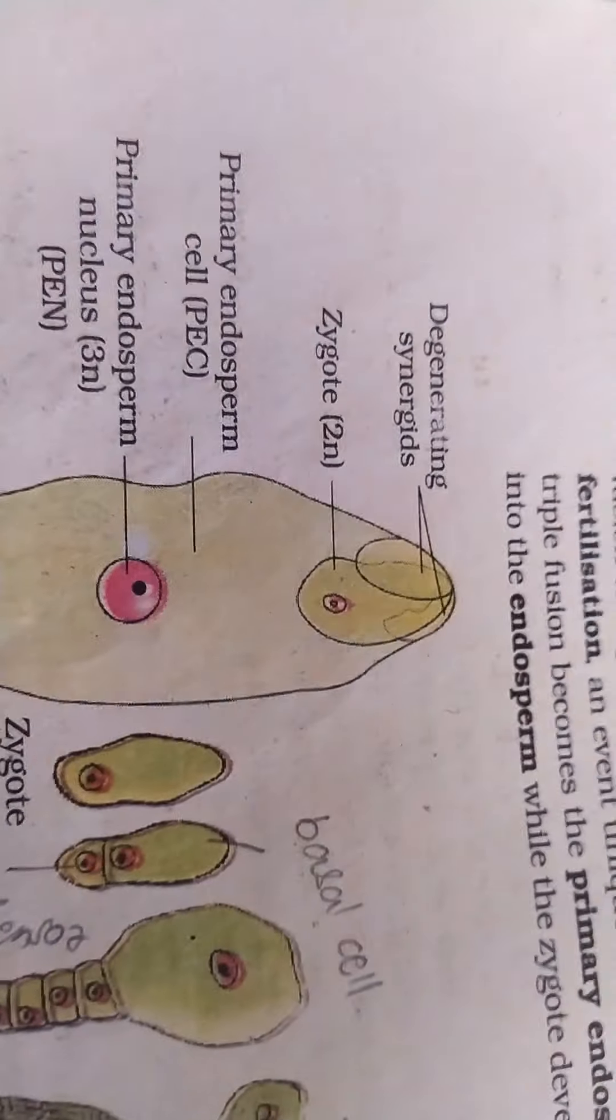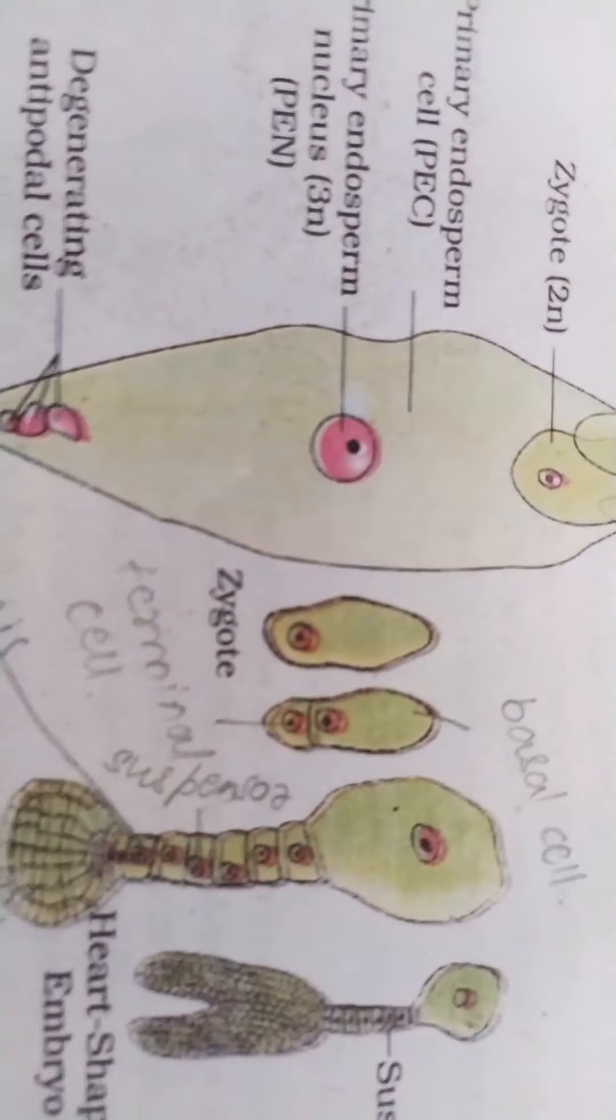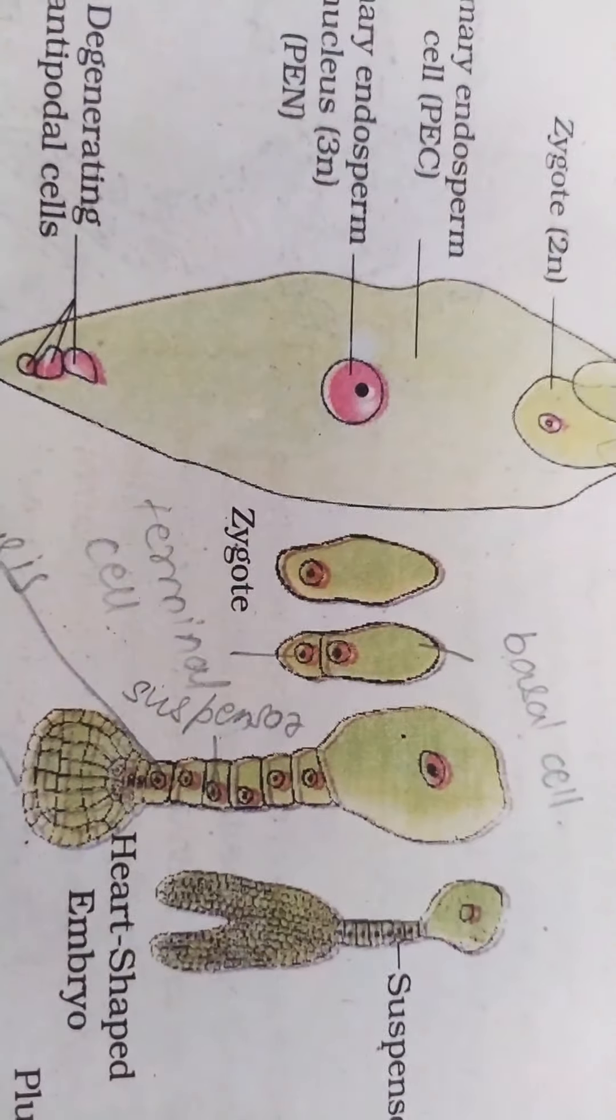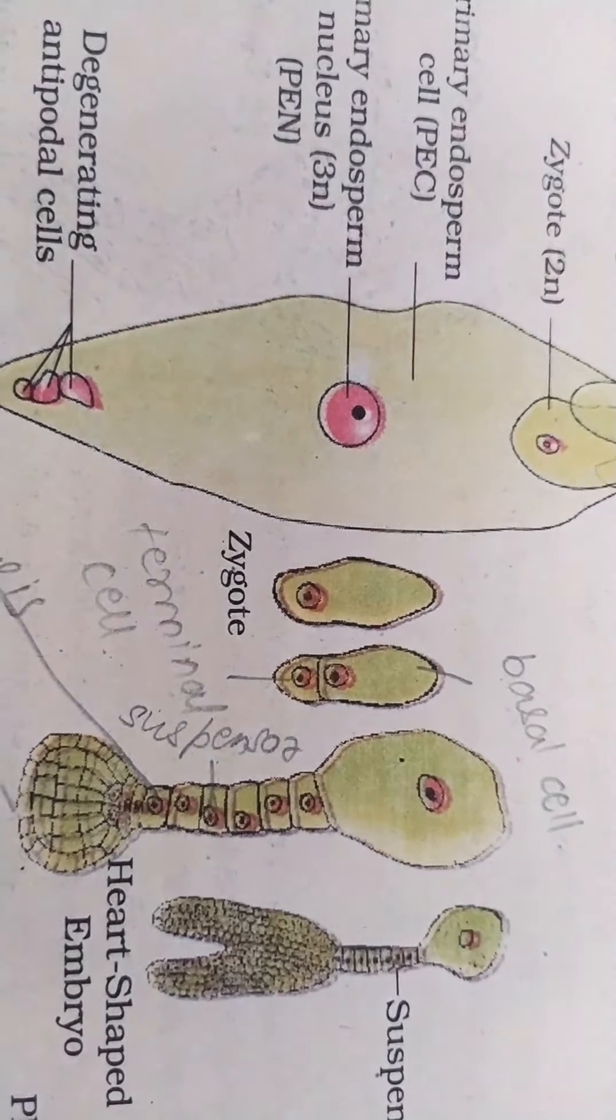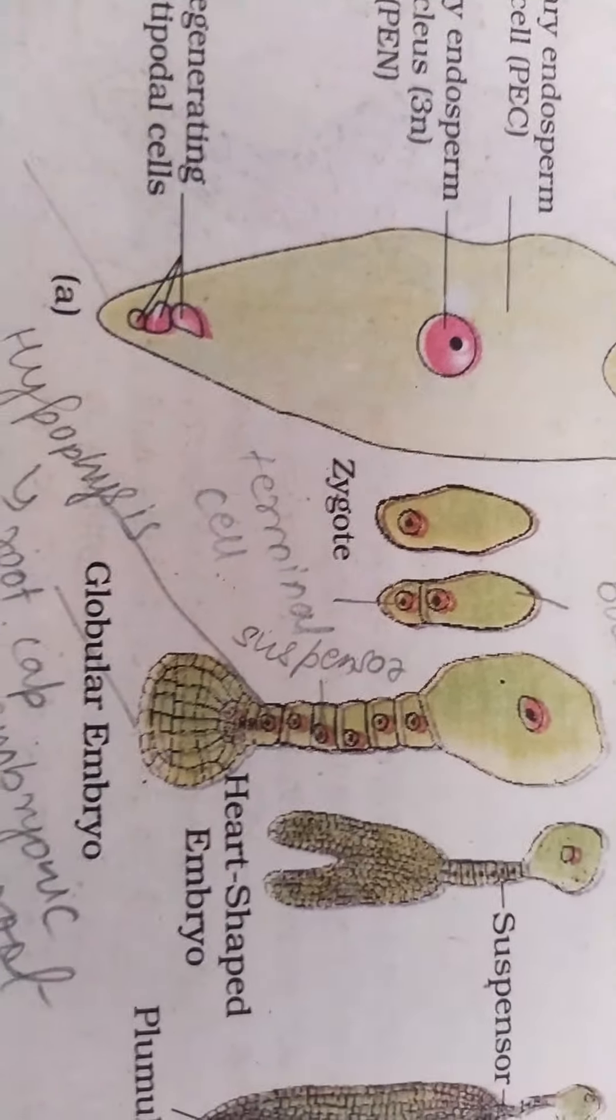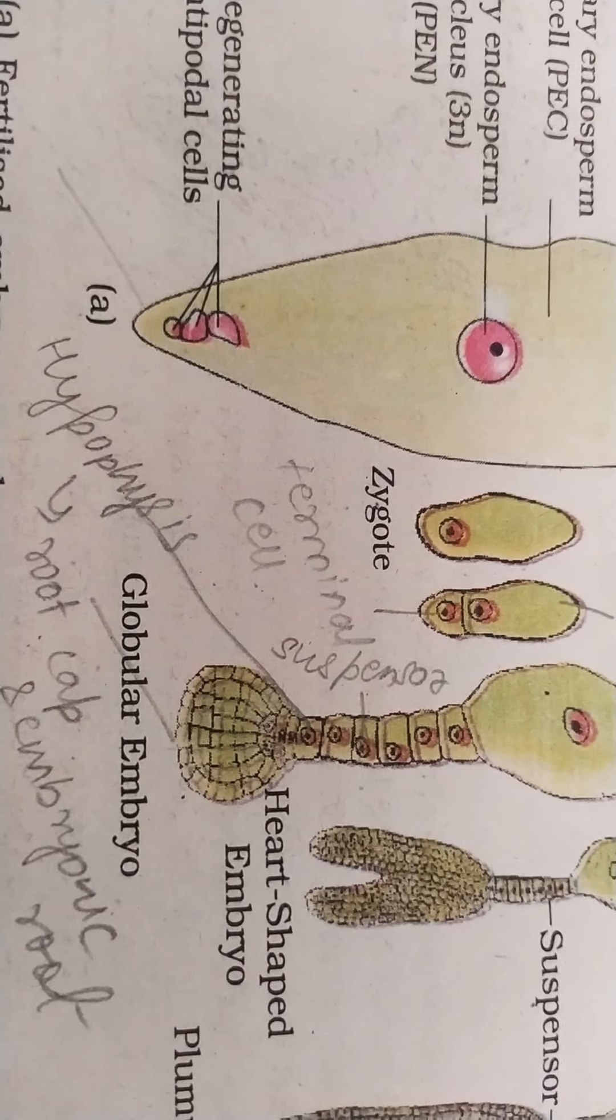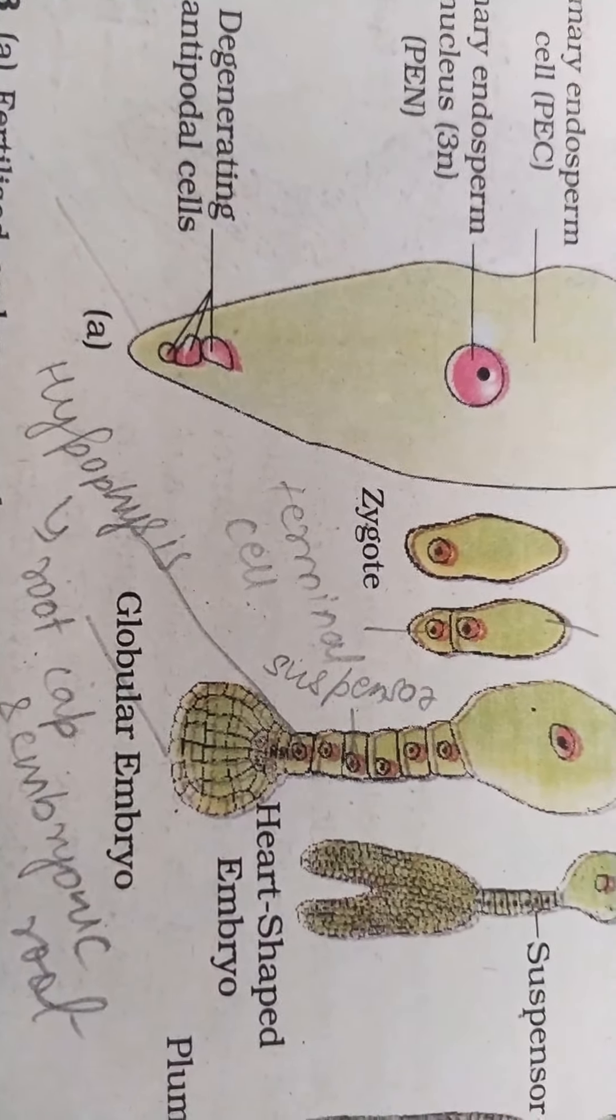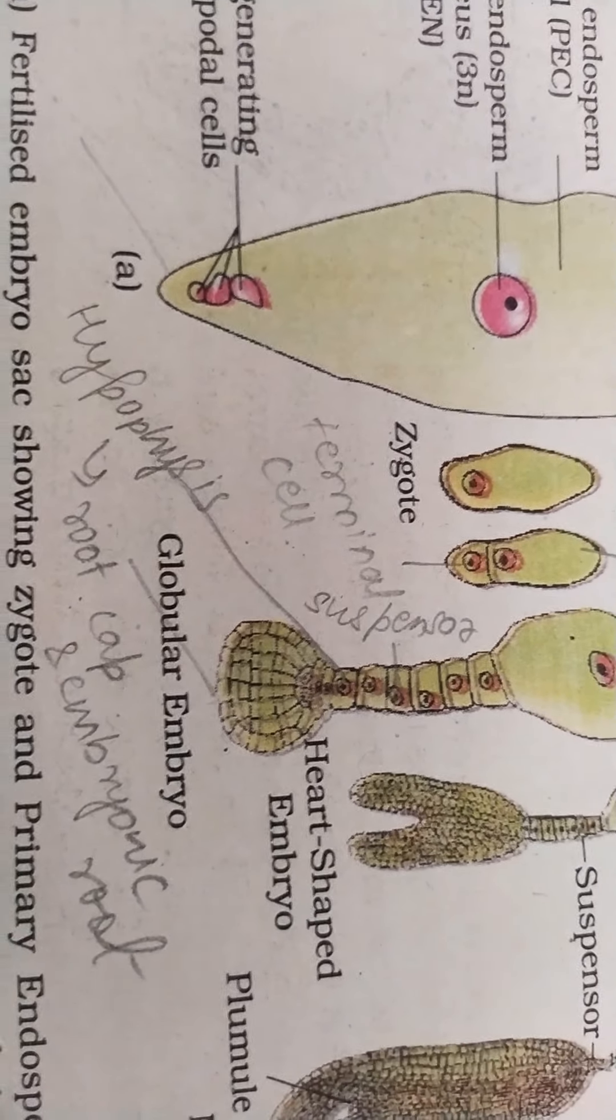Now if you focus on zygote development, it divides mitotically giving you a basal cell and then a terminal cell. And then the terminal cell goes on dividing to give you suspensor.